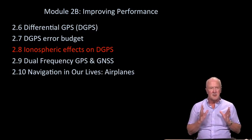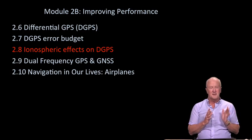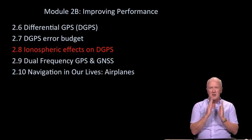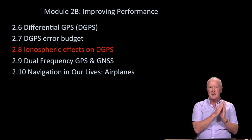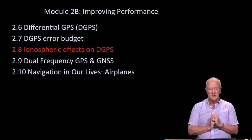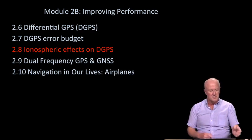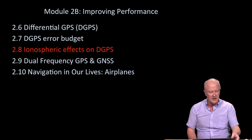We did flag that it's not perfect, and that when the ray that comes from satellite to rover differs in some electromagnetic way from the ray that comes from satellite to reference, we do still get residual errors. The most worrisome of those are those due to the ionosphere. So let's dig into that a little bit.